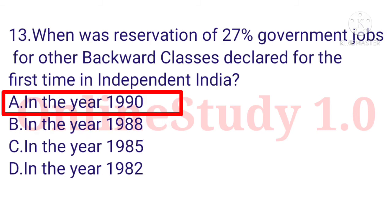Question number 13: When was the reservation of 27 percent government jobs for Other Backward Classes declared for the first time in independent India? The 27 percent reservation for OBCs in government jobs was first declared in independent India.